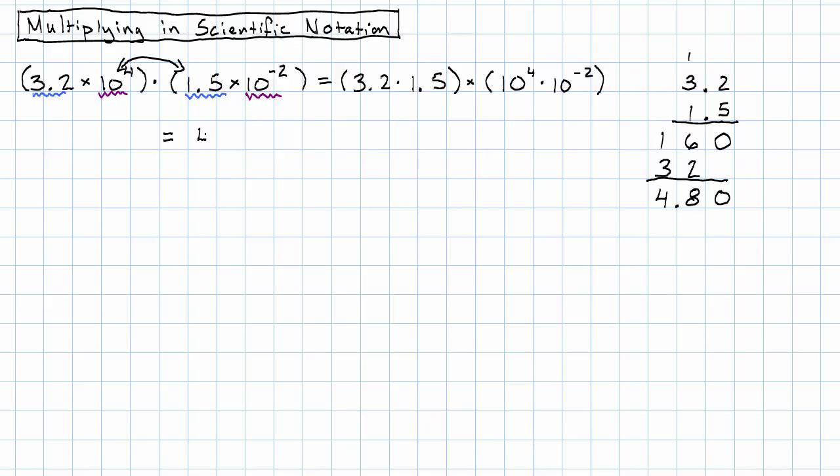So I get 4.80 times 10 to the... I'm multiplying together two different powers of 10, so I just add the exponents. 4 plus negative 2, that's 2. So I've got 4.80 times 10 to the 2.